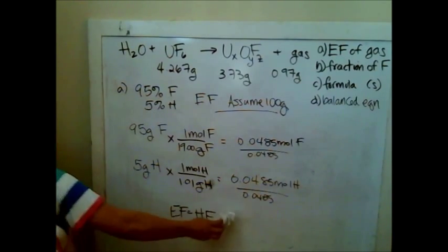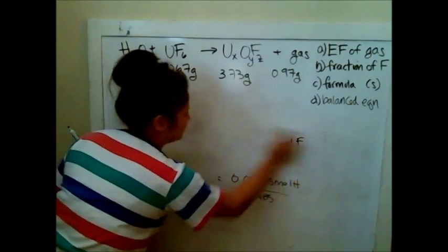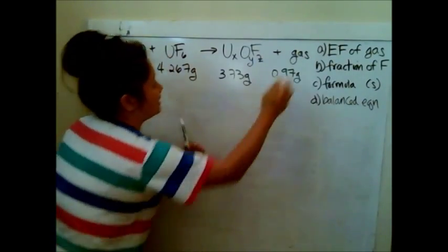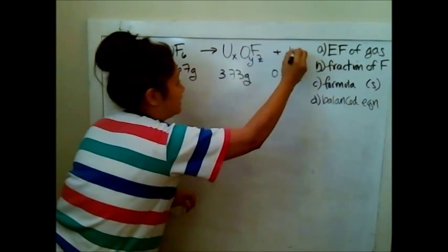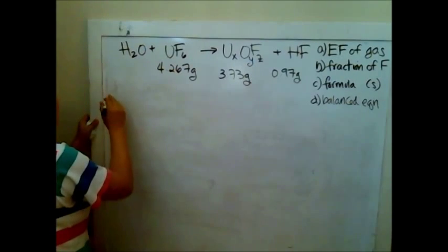Which means that my empirical formula must just be HF. Okay, so you just got one point on this problem because you solved for one part of it. I'm going to go back up here and say, now I know this isn't some unknown gas. Now I know it's HF. Okay, and that's going to help me out because later on I need to do the balanced equation.